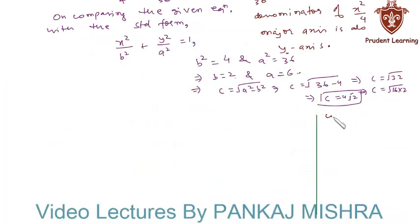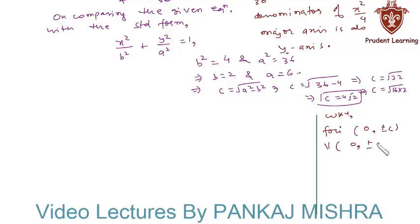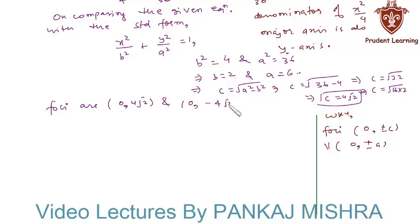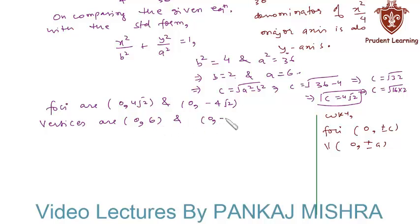We know that the foci of this ellipse are at (0, ±c) and vertices are at (0, ±a). Therefore, in this question, foci of the ellipse are at (0, 4√2) and (0, -4√2), and vertices are at (0, 6) and (0, -6).